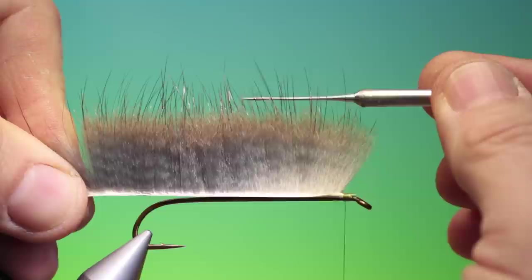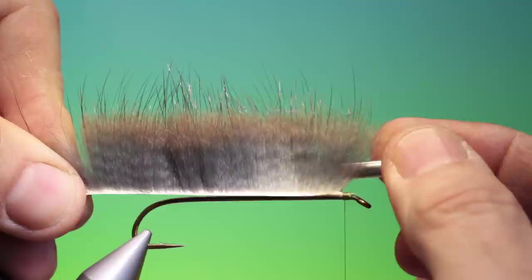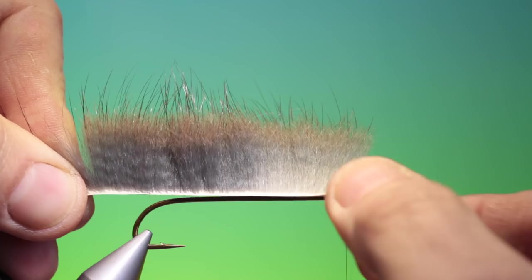Now the guard hairs are the oiliest ones. These protect the fur from water. So the under fur is the dense one. This is the insulating fur which also traps air which helps also against water.